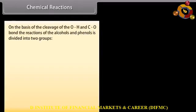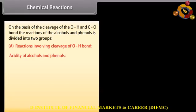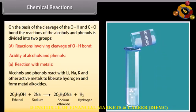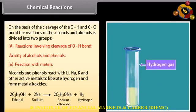On the basis of the cleavage of the O-H and C-O bond, the reactions of the alcohols and phenols are divided into two groups: reactions involving cleavage of O-H bond, and acidity of alcohols and phenols. Alcohols and phenols react with lithium, sodium, potassium and other active metals to liberate hydrogen and form metal alkoxides.